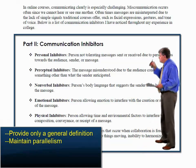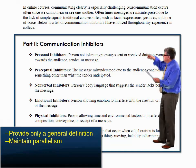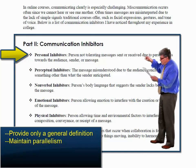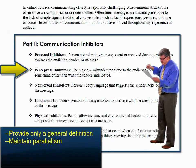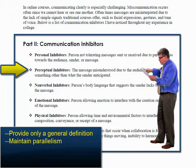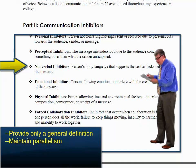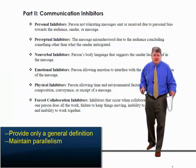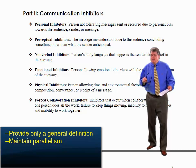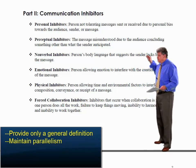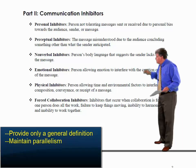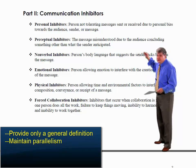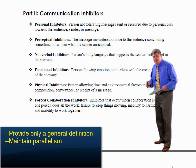Let's look at Tamara's parallel items. Notice she is using the non-sentence style: 'Personal inhibitors — person not tolerating messages sent or received due to personal bias. Perceptual inhibitors — the message misunderstood. Non-verbal inhibitors — person's body language.' Notice they're not sentences — that's fine. You can have definitions that are not sentences; that's how the dictionary does it. So if you start off with non-sentences, you must have non-sentences in all of them. If you start off with sentences, you must have sentences throughout. They must be parallel.